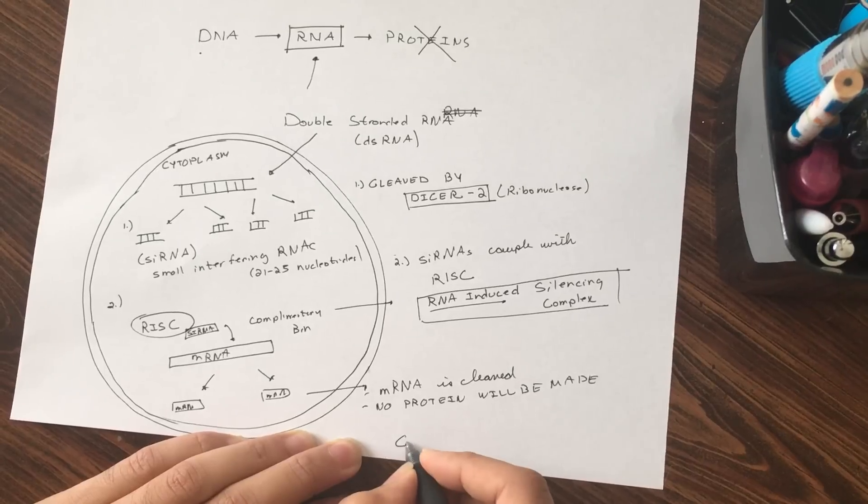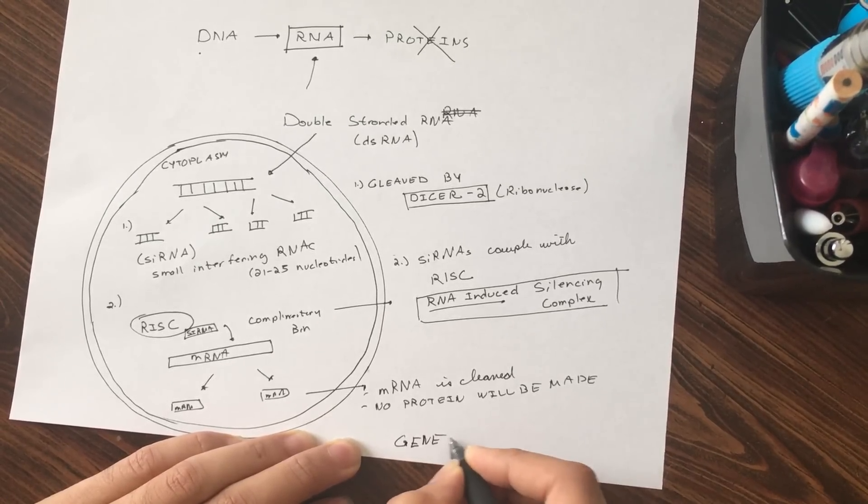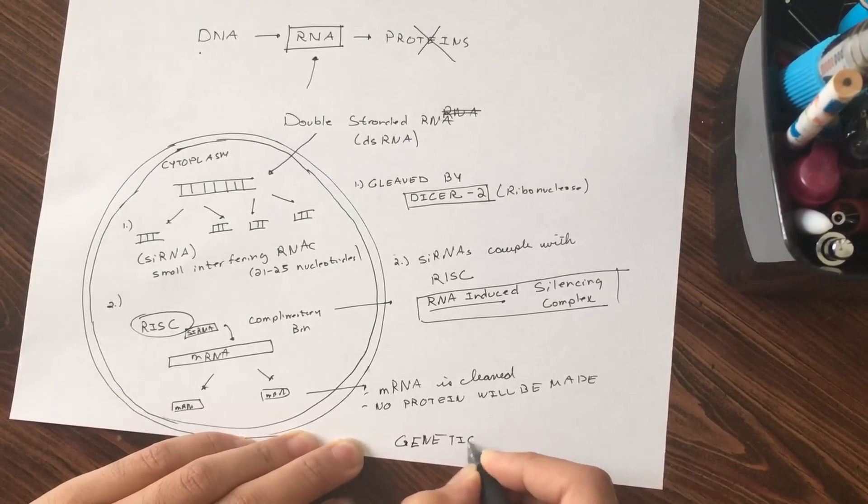So this is how you get genetic silencing through RNA interference.